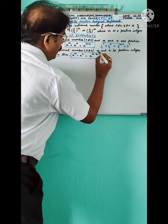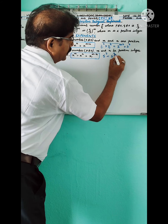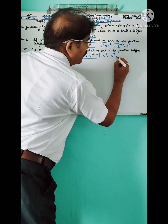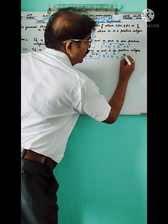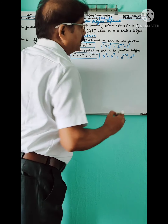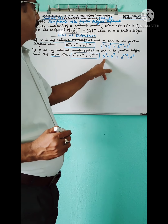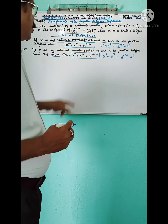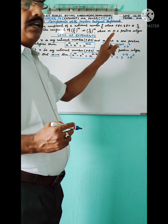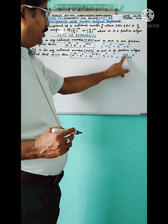Now for division: 5 to the power 7 divided by 5 to the power 3. Since 7 is greater than 3 and the bases are the same, we subtract the exponents: 5 to the power 7 minus 3, which equals 5 to the power 4. So the second rule is: when dividing with the same base, the exponents are subtracted, giving x^m ÷ x^n = x^(m−n), where m is greater than n.